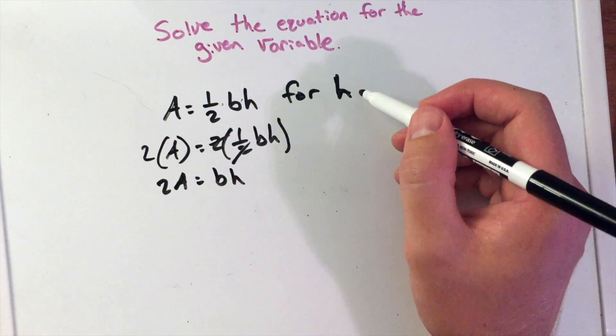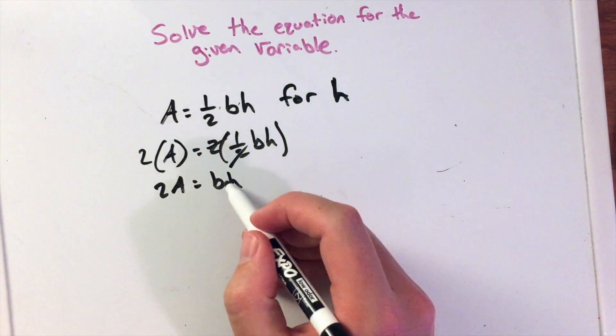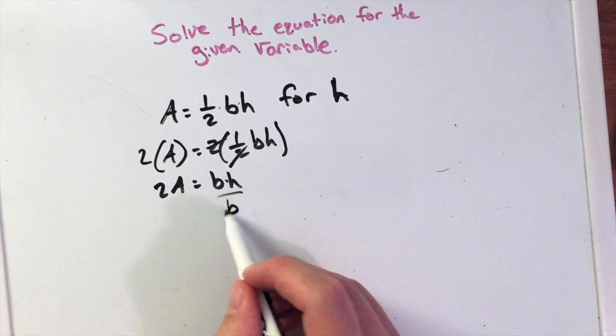So again, we want to get h by itself. The next step we would have to do, well, we have multiplication here, so we have to divide by the letter b.